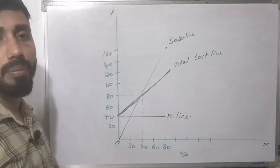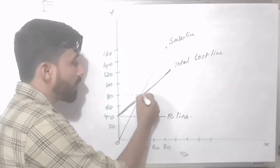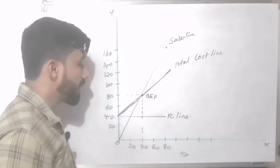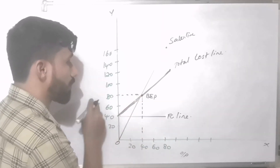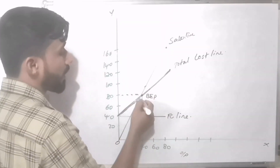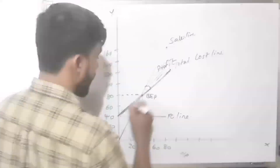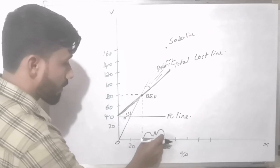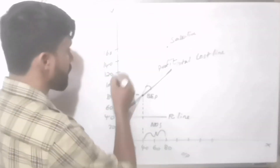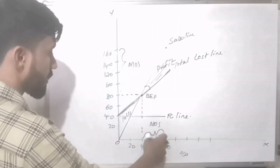At the break-even point, the sales line intersects the total cost line. This BEP is at 40,000 units. The angle formed at this intersection is called the Angle of Incidence. The area above the BEP is the Profit Area, and the area below is the Loss Area.